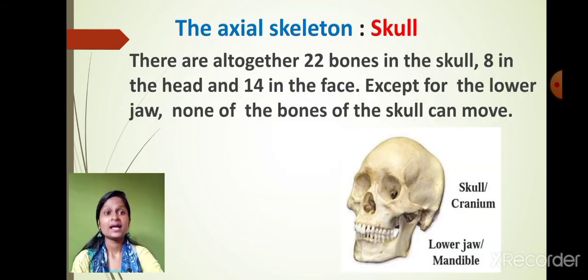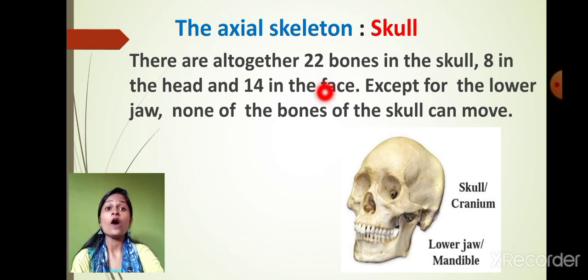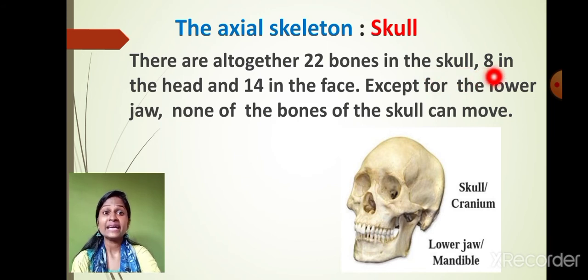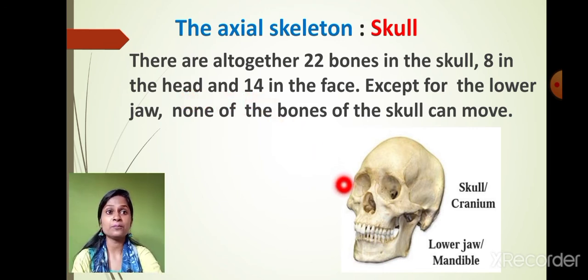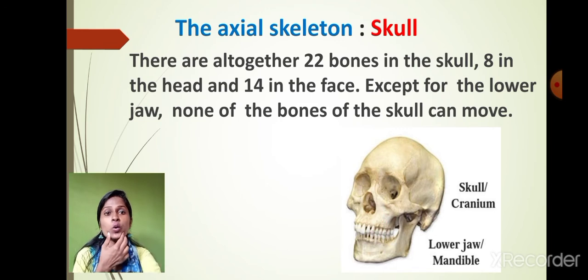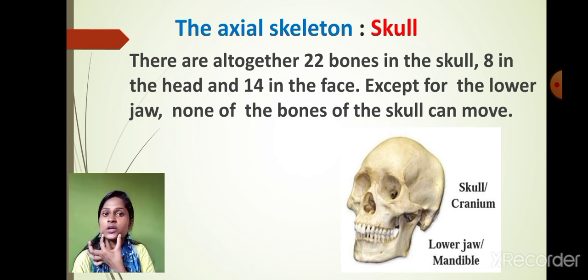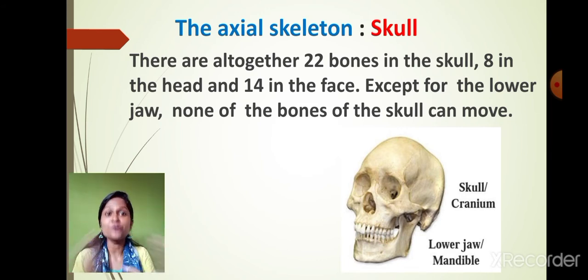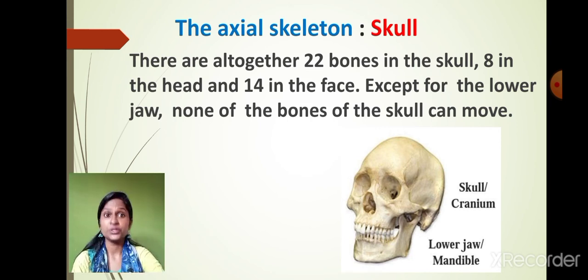In our skull, there are a total of 22 bones. Out of 22, eight bones are present in the head region and 14 bones are present in the face region. Only our lower jaw is movable — when we talk or eat, only the lower jaw moves. All other bones of the skull are not movable.